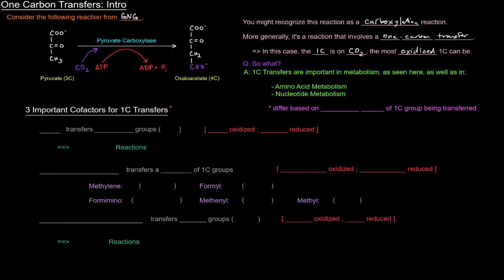Okay. Now, when it comes to one carbon transfer reactions, there are three important cofactors for those one carbon transfers. And these different cofactors differ based on the oxidation state of the one carbon group being transferred.